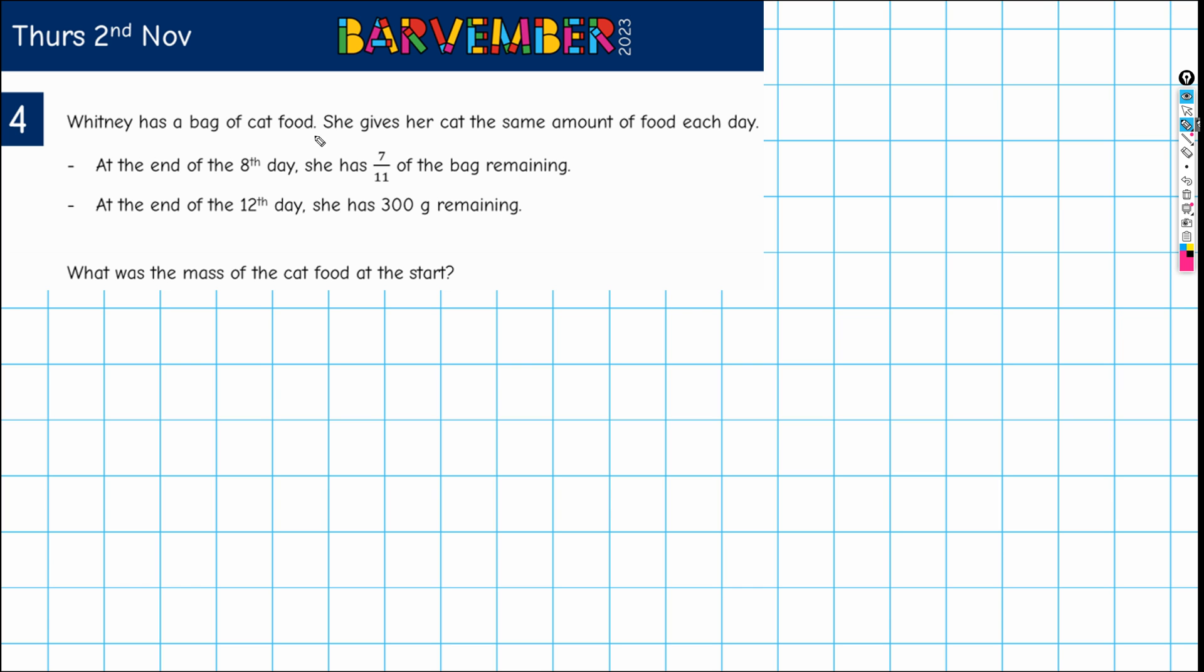Whitney has a bag of cat food. She gives her cat the same amount of food each day. At the end of the eighth day, she has seven elevenths of the bag remaining. And at the end of the twelfth day, she has 300 grams remaining. And we are asked what was the mass of the cat food at the start?